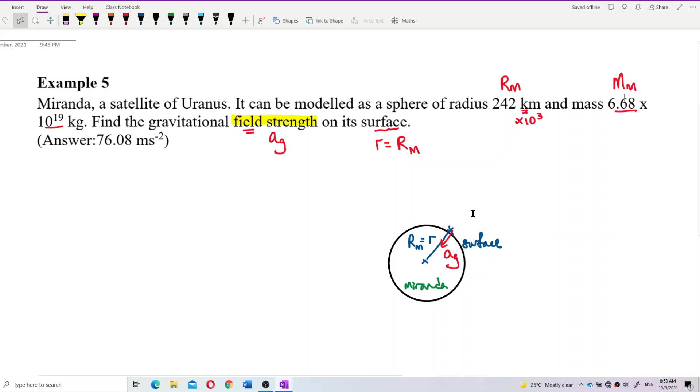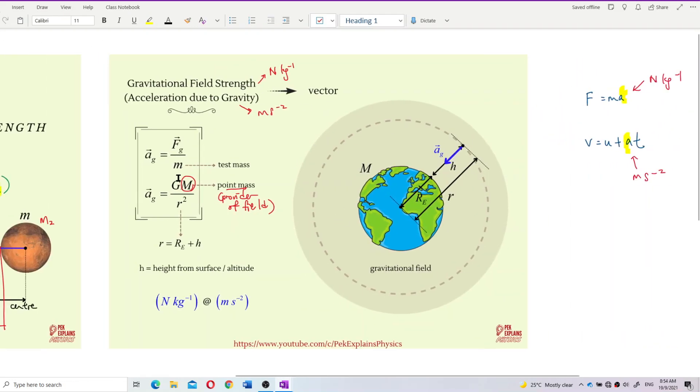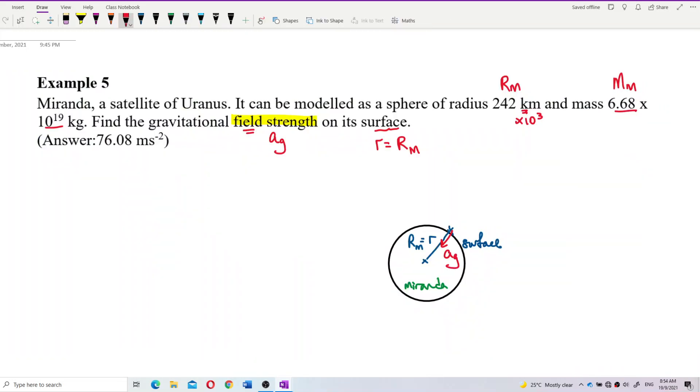So, we already have the mass. We can use the formula for gravitational field strength, which is this formula. Gravitational field strength is gm over r square. Let's do it. So, ag is equal to gm over r square. However, our r is just the radius because it's on the surface.